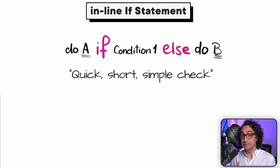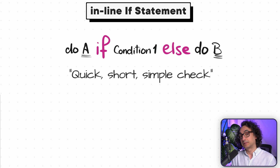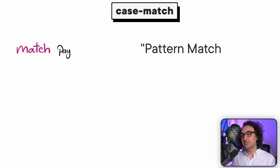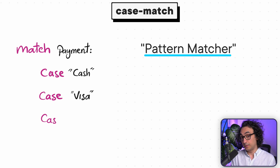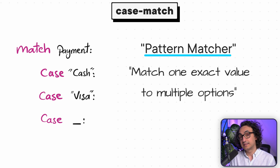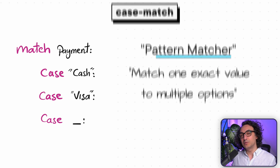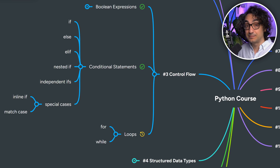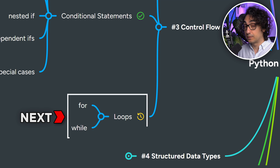We also learned independent ifs — if after if after if — which you use when all conditions must be checked and nothing can be skipped, because all conditions are equally important. Then we have inline if statements, where everything is compacted into one line, but remember: only if and else are allowed — no else-if. And finally, if you want to match exact values with clean, readable code, use the modern match-case — but only for simple exact matching, not for complex or combined logic. Those are the types of conditional statements and when to use each one.